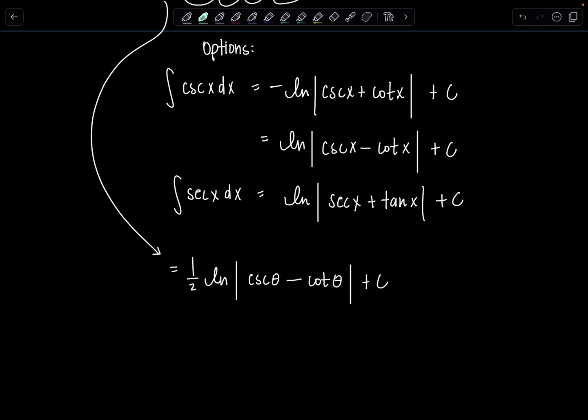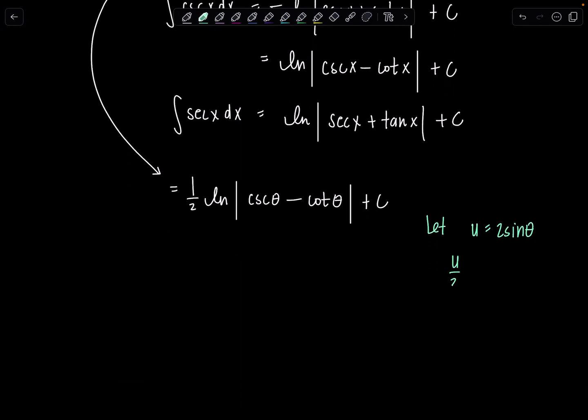And then remember when we made our trig sub, we let u be two sine theta. So now we need to draw a triangle. Isolate the trig function. So u over two is sine theta. So here's my triangle for theta. Sine theta is the ratio of the opposite over the hypotenuse sides of the triangle. From the Pythagorean theorem, this missing side is rad four minus u squared, which you'll remember that was in our integral earlier. That's not a surprise. That's going to always happen.